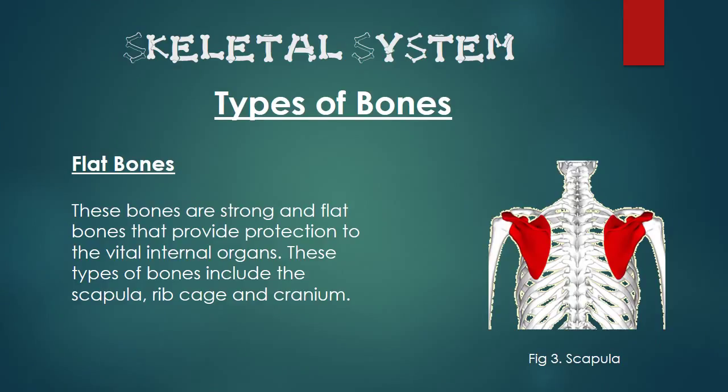The next type of bone is the flat bone. These bones are strong and flat and provide protection to the vital internal organs. These types of bones include the scapula, rib cage and cranium.